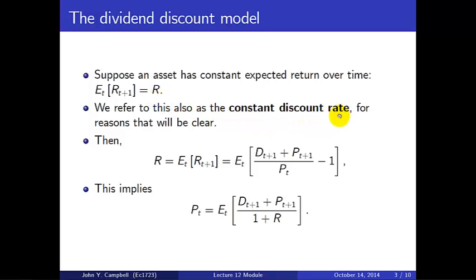It's a constant discount rate over time. When we talk about expected returns we're thinking forward in time — investing now and earning a return later — whereas when we talk about a discount rate we're implicitly working backwards from the future to the present. We're asking what discount rate, when applied to future cash payments, will give us the current price. In this course we go quite flexibly between expected returns and discount rates; they're just two different ways of expressing the same thing.